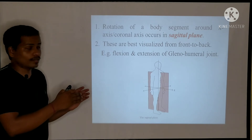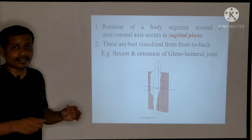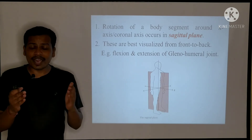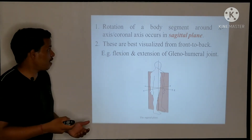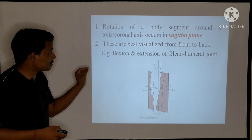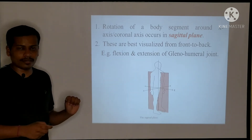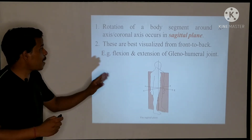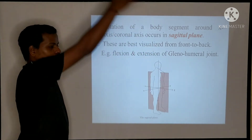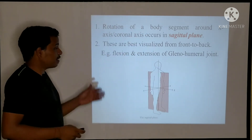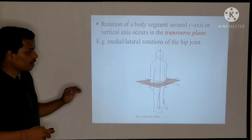The sagittal plane divides the body into right and left halves, as seen in this picture. The rotation of a body segment around the X-axis, or coronal axis, occurs in the sagittal plane. The sagittal plane is best visualized as front-to-back motions — for example, glenohumeral joint flexion and extension are examples of sagittal plane movements.